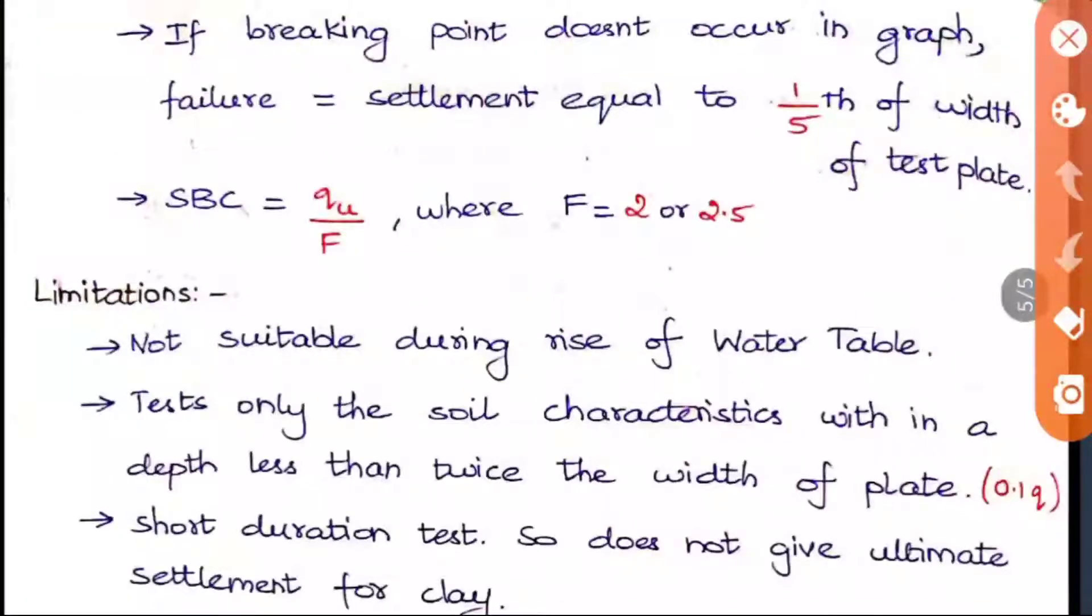If the breaking point doesn't occur in the graph, that is with respect to settlement and pressure we are drawing a graph. At a point it should break and it should fail. If that point doesn't occur, what they will do is they will take the settlement equal to the 1/5th of the width of the test plate. The test plate's 1/5 times the width will be taken as the settlement value, and at that settlement we will be stopping the procedure.